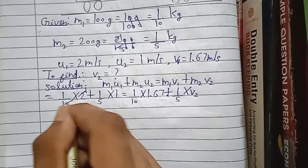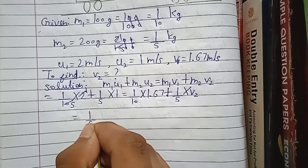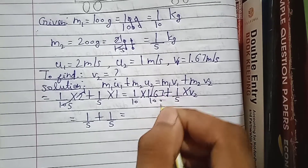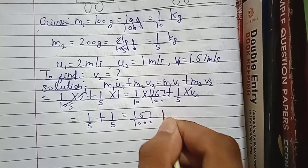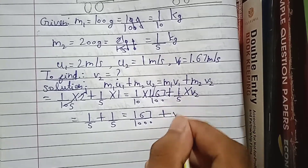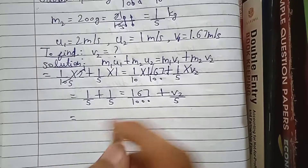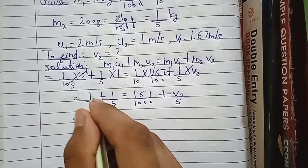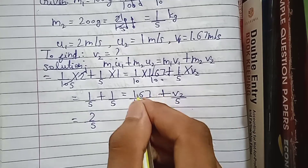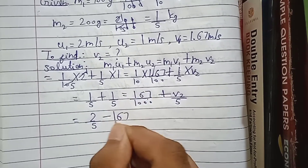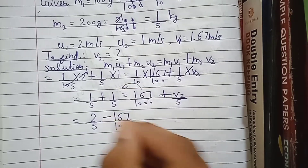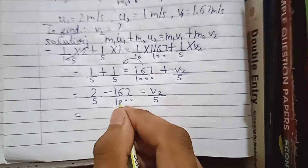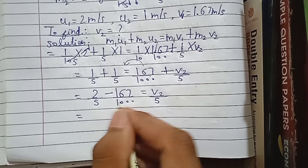Simplifying the left side: 2 divided by 10 is 1/5, plus 1/5 gives 2/5. On the right side, removing the decimal from 1.67 gives 167/1000, plus v2/5. Transposing 167/1000 to the left side, it becomes negative: 2/5 minus 167/1000 equals v2/5.